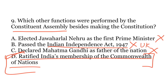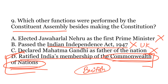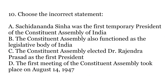The Constituent Assembly ratified India's membership of the Commonwealth of Nations. An interesting point: the Commonwealth of Nations was earlier known as the British Commonwealth of Nations. India agreed to join only if the prefix 'British' was removed, and Britain agreed to that. The Commonwealth of Nations is a group of all countries that were once under British colonial rule.